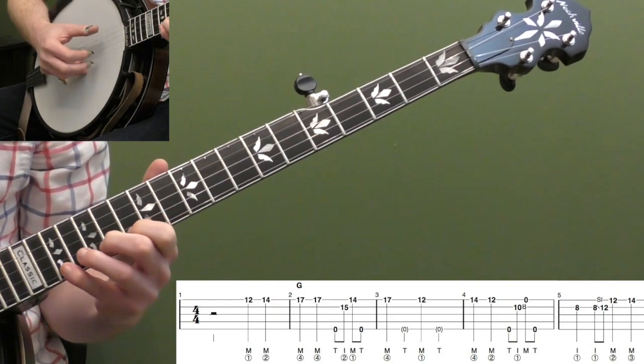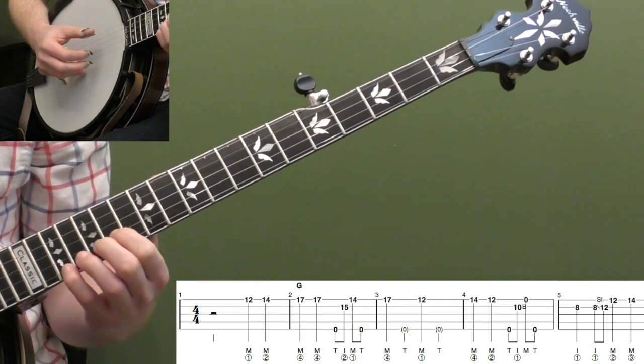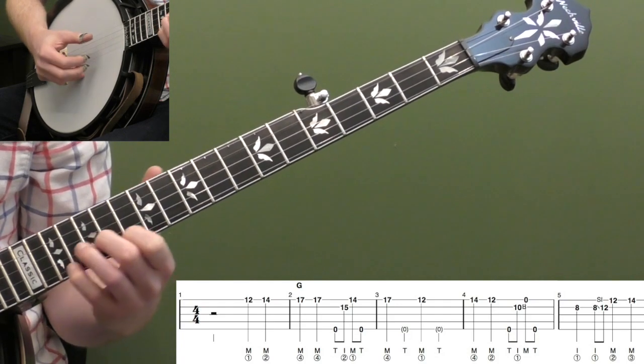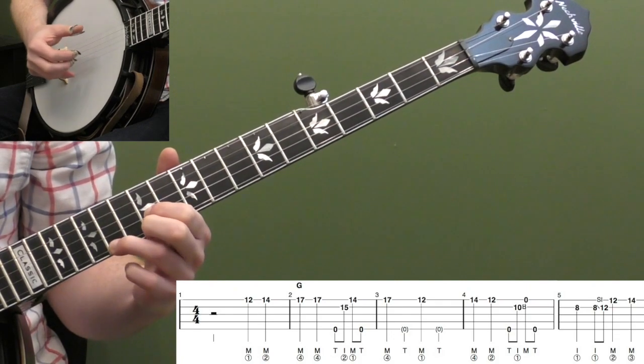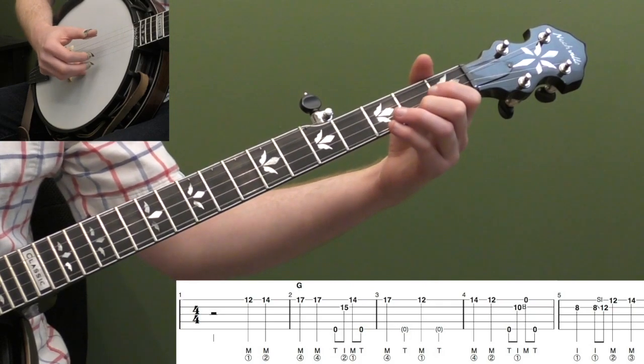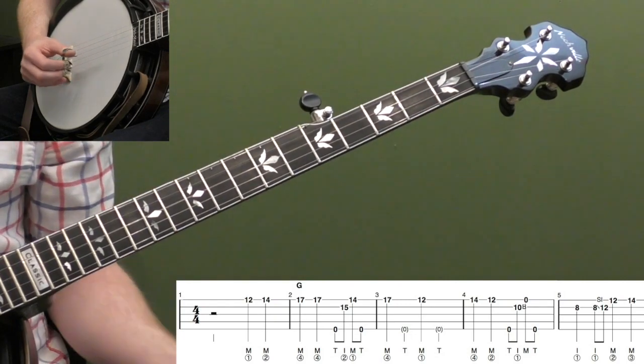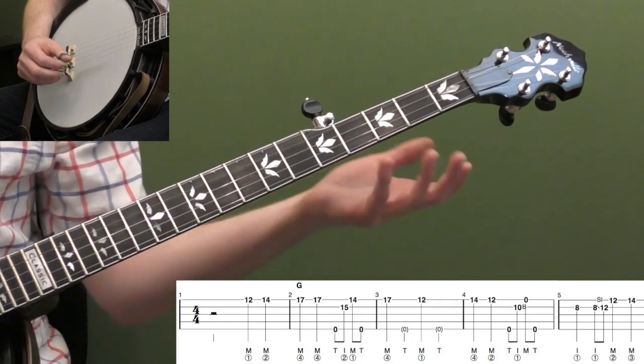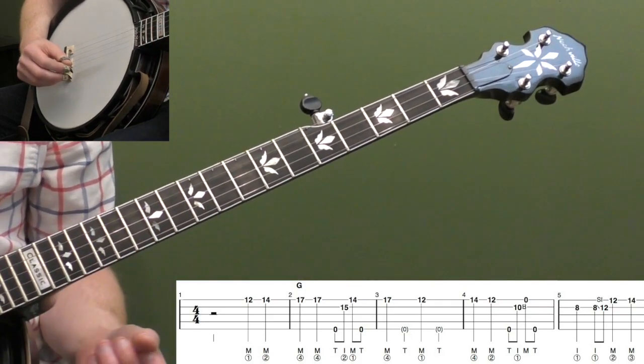Do that a few times. One more time real slow. Alright, so for this intermediate solo, we're going to look at taking that basic melody and playing those notes up the neck. It's not going to be note for note how you'd play it down here. But again, we're going to try and capture some of that flavor of the down the neck solo, moving it up the neck.